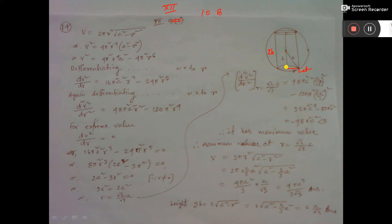So this one will be x. So there is a relation between A and r, that is A² = x² + r². And volume they have given 2πr²√(A² - r²).